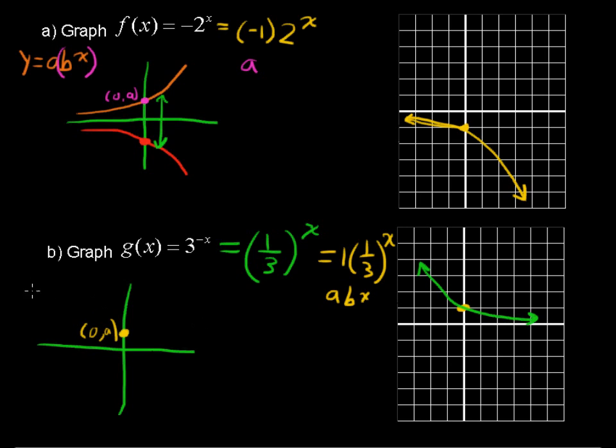Okay, so in general, you have this, this will be our form in general. And I'll say, when b is in between, in between 0 and 1. Where, in this case, our 1 third is our b. Okay, so we've graphed a couple of exponential functions.